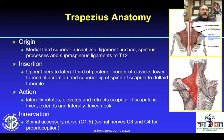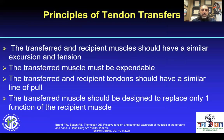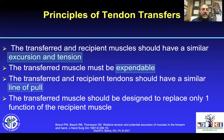The trapezius origin is the middle third of the nuchal line, ligamentum nuchae, the spinous processes, and the supraspinous ligament to T12. The insertion is the upper fibers to the lateral third of the clavicle, the lower fibers to the medial acromion, and the superior lip of the spine of the scapula to the deltoid tubercle. It laterally rotates, elevates, and retracts the scapula. Its innervation is the spinal accessory nerve, roughly 2 centimeters medial to the medial scapular border. The principles of tendon transfers: the transferred tendon and recipient muscles should have similar excursion and tension; the transferred muscle must be expendable; the transferred and recipient tendon should have a similar line of pull; and the transferred muscle should be designed to replace only one function of the recipient muscle.